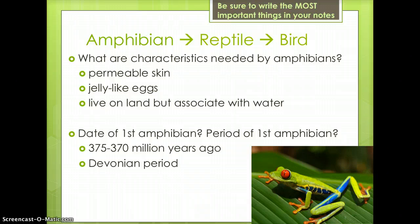Amphibians were the first of these three animals to exist. Amphibians have permeable skin, jelly-like eggs, and they live on land but associate with water. The first amphibians appeared in the fossil record approximately 375 to 370 million years ago during the Devonian period. Frogs are an example of amphibians.